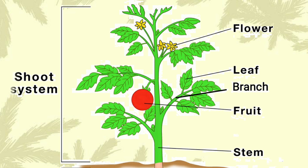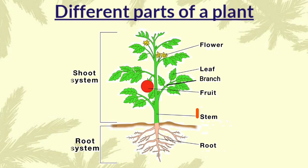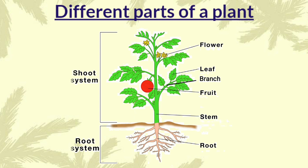The parts which are above the soil are the shoot system. In the shoot system, we have stem, leaf, branch, flower and fruit. Stem provides support and helps the plant to stand upright. It also carries water and nutrients to different parts of the plant.